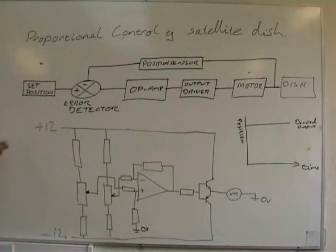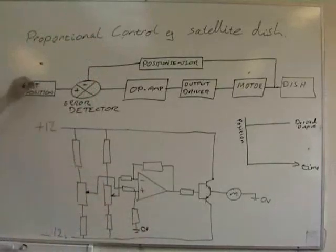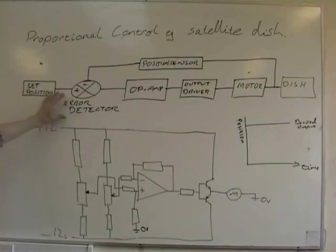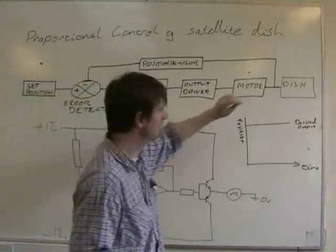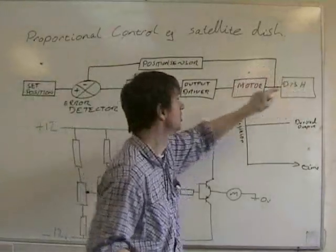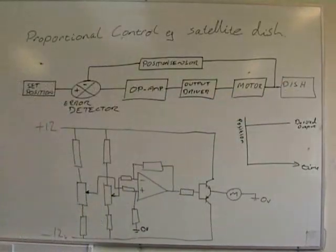We'll take this example here of a satellite dish. The dish is up on the roof. They're sitting down in the armchair. The operator turns the dial down here. There's an error of some sort when he turns the dial. The op-amp drives the driver, turns the motor, the motor turns the dish. The dish's position has been measured by some sort of position sensor.